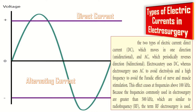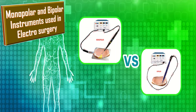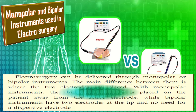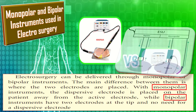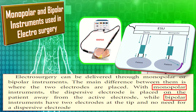The frequencies commonly used in electrosurgery are greater than 500 kHz, which are similar to radiofrequency, so the term radiofrequency electrosurgery is used. Electrosurgery can be delivered through monopolar or bipolar instruments. The main difference is where the two electrodes are placed — with monopolar instruments, the dispersive electrode is placed on the patient away from the active electrode, while bipolar instruments have two electrodes at the tip and require no dispersive electrode.